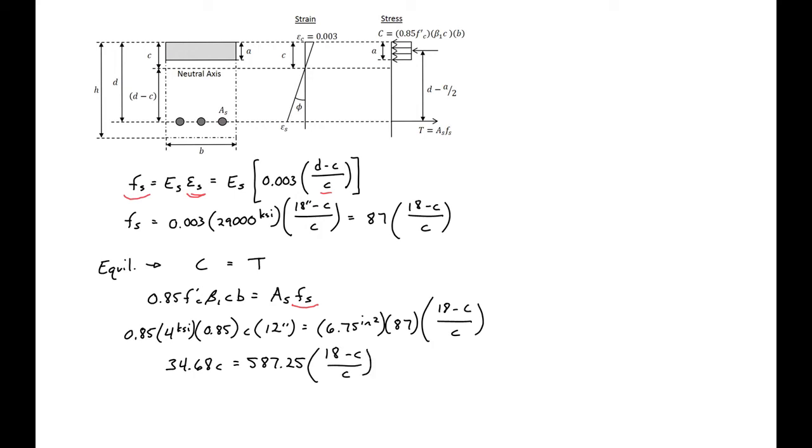We can then multiply through by C and rearrange to give us a quadratic. So we'll have 34.8C² plus 587.25C minus 10,570.5 equal to 0. And then solving this quadratic, we'll get our C equal to 10.94 inches, which we'll use in our next step.